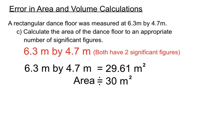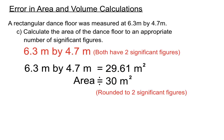We need to round off to two significant figures. We could quote 29, but we check the next digit — the 0.6 rounds that 29 up to 30. So our answer has two significant figures, which is appropriate because we had two significant figures in each of the original dimensions. The area we should quote is 30 m².